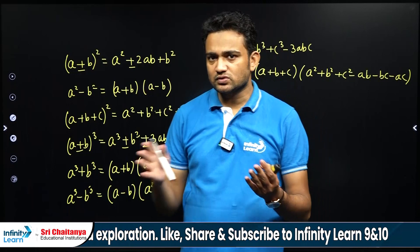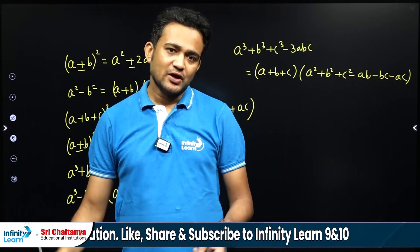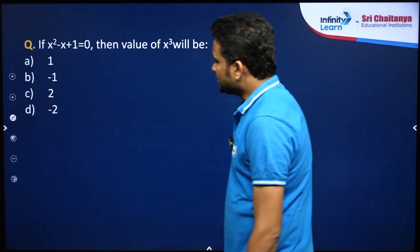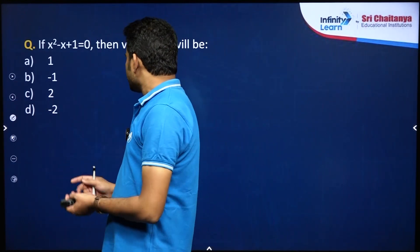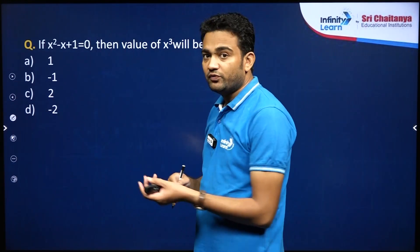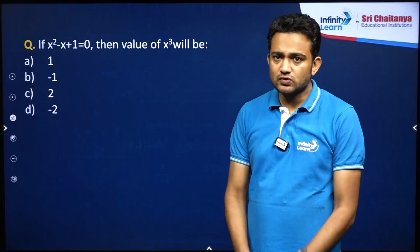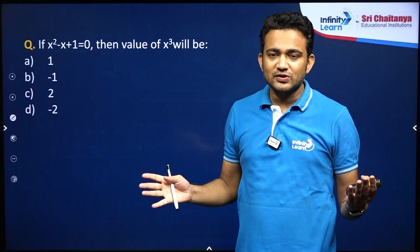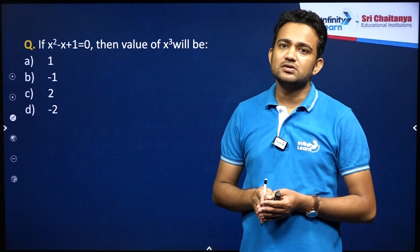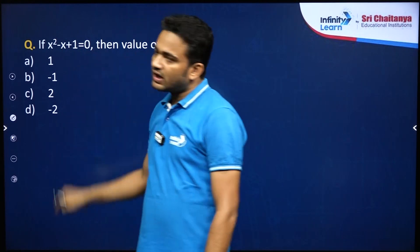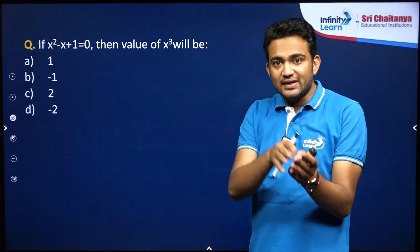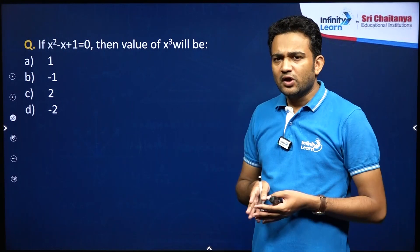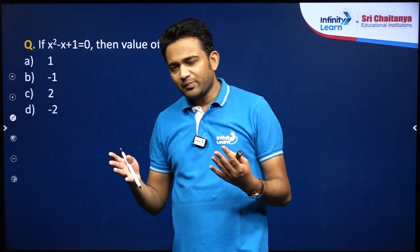So these are the identities and you should know all of them to solve the questions. So let us start with the question part. Now the first question: if x square minus x plus 1 is 0, then the value of x cube will be. So how to solve this question? Your first approach is to try to factorize this. But you cannot factorize it because this equation has complex roots, meaning the discriminant d is less than 0. So what I will do? We will try to solve this question with the help of identities.